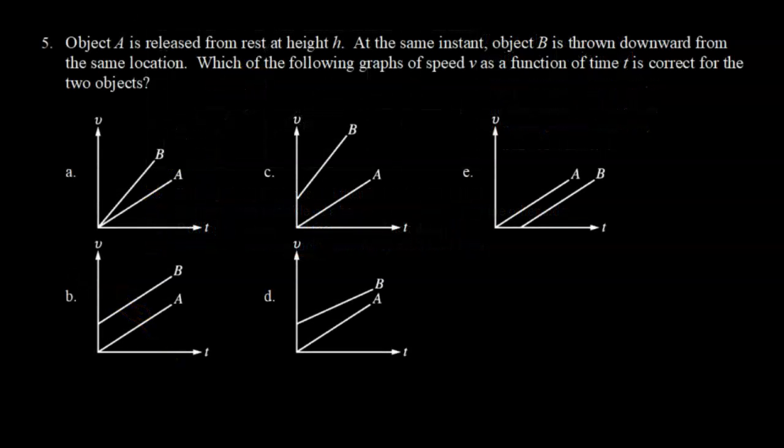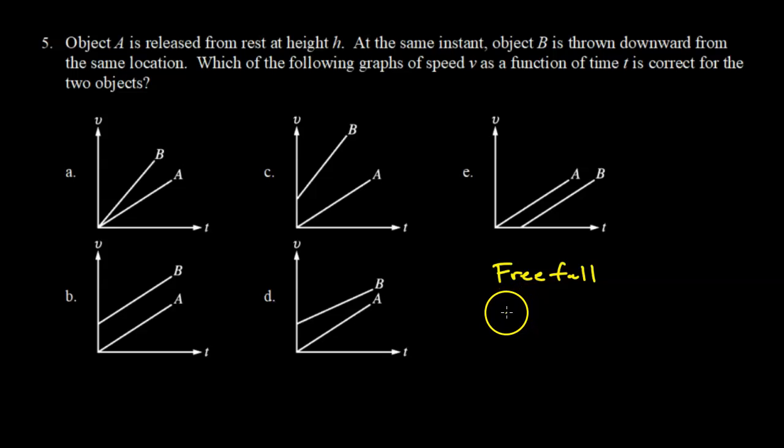Question 5. Object A is released from rest at height h. At the same instant, object B is thrown downward from the same location. Which of the falling graphs of speed V as a function of time is correct for the two objects? So here we're dealing with free fall. And we know that in free fall motion that the acceleration is constant equal to G, which is about 10 meters per second squared.